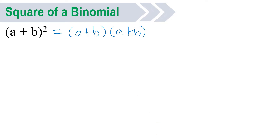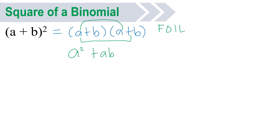Let us try to use the FOIL method. F is for the first terms: a times a, that will be a squared. O is for the outer terms: a times b, we have positive ab. I is for the inner terms: b times a, that is also positive ab. And L is for the last terms: b times b, and it will be b squared.